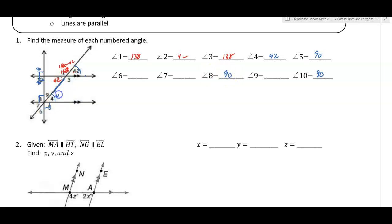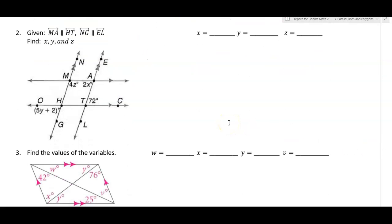Since angle four is 42 degrees, angle seven is also 42 because those are vertical angles. For angle six, these two angles add up to 90, so angle six is 90 minus 42, which is 48 degrees. Angle nine and angle six are vertical angles, so that's also 48 degrees. You don't have to go in numerical order with these types of problems.